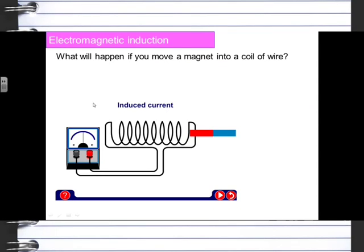Let's look at electromagnetic induction. We start with a magnet with a north and a south pole, connected to an ammeter that can record the current.